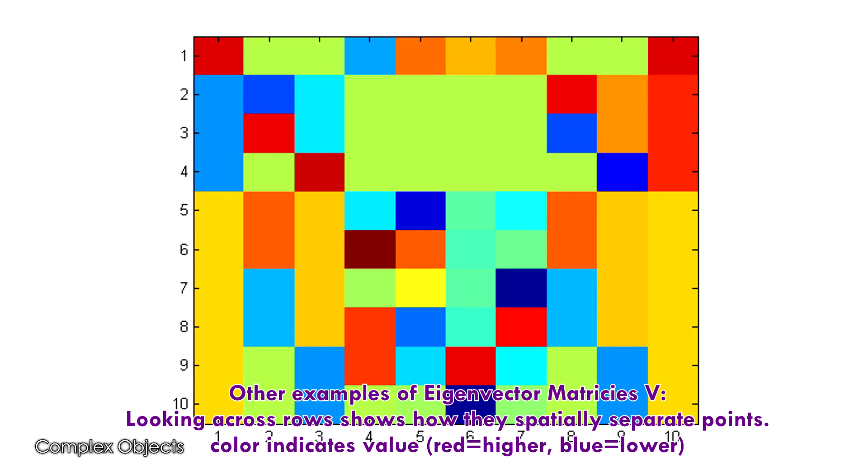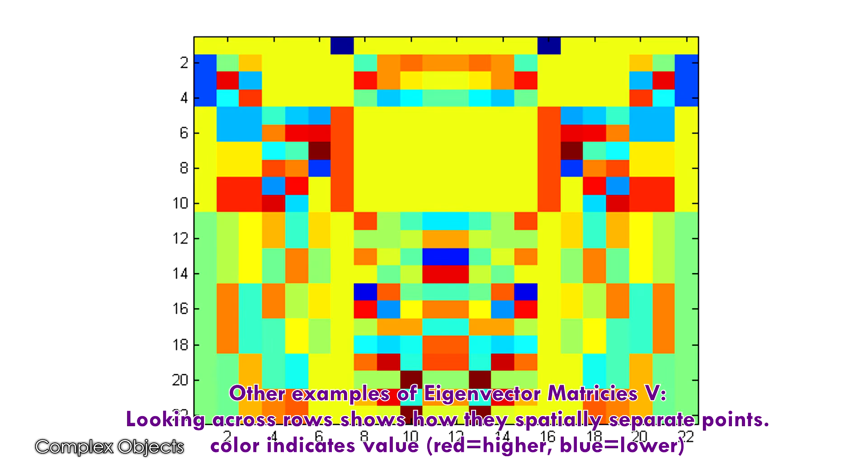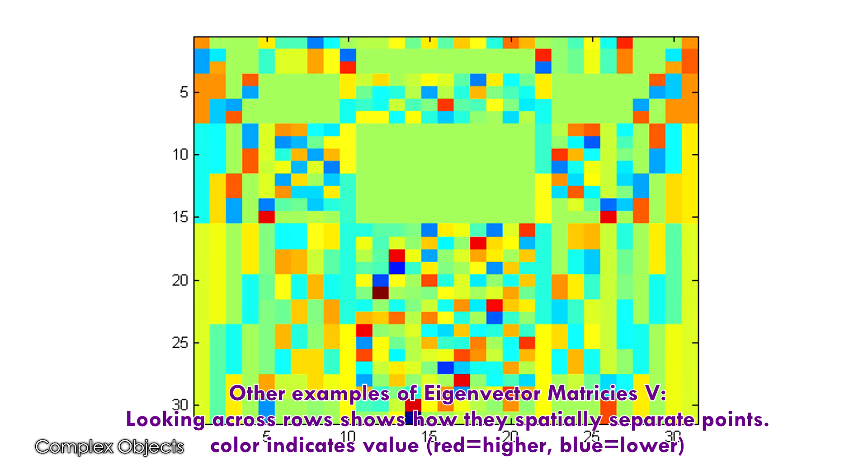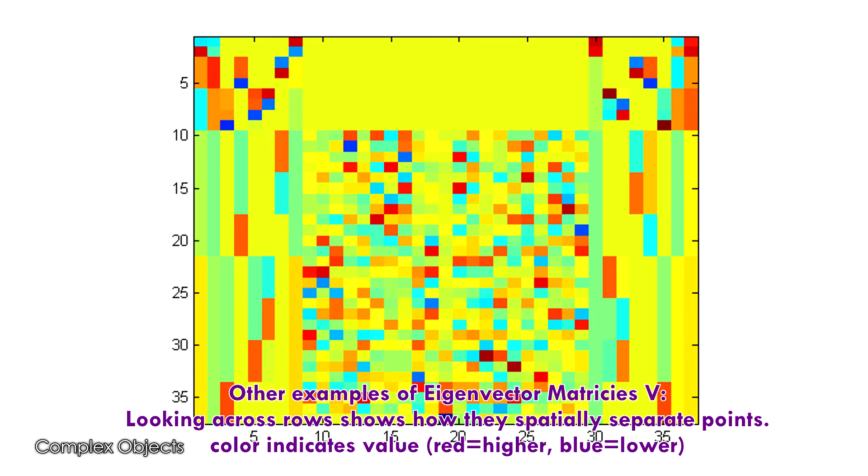In order to be transformed into a scaled version of themselves, they kind of have to have that structure that you see. The best explanation I can give is that because they're eigenvectors, they have this property of separating points so that when you look across the rows, it puts points in different parts of a space. If that's not making sense, I have a second way of explaining which might be a bit easier.